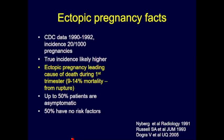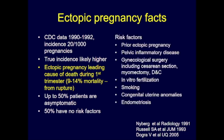A few ectopic pregnancy facts: ectopic pregnancy is about 2% of all pregnancies, but the true incidence is likely higher. It is the leading cause of death in the first trimester, with up to 9–14% mortality from rupture. It is the onus of the radiologist to make the diagnosis, as 50% of patients are asymptomatic and up to 50% have no risk factors. Risk factors include prior ectopic pregnancy, history of PID or gynecologic surgery, in vitro fertilization, smoking, congenital uterine anomalies, and endometriosis.